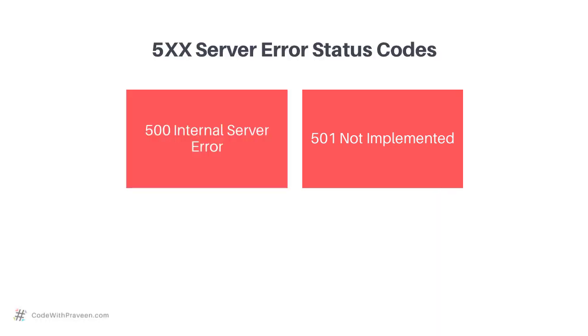In short, any error in the 500 series signifies that it is a problem with the server, whereas any status code in the 400 series signifies a problem on the client side.